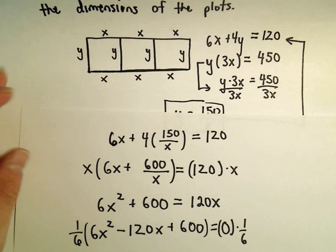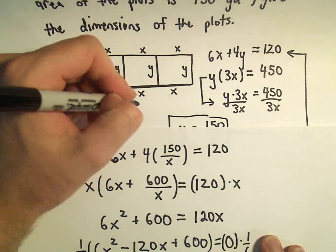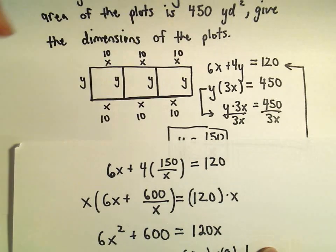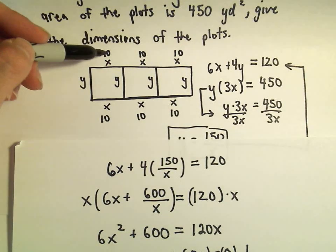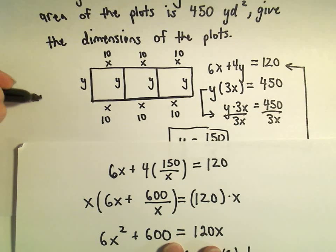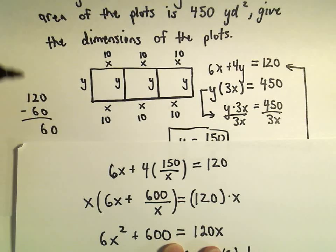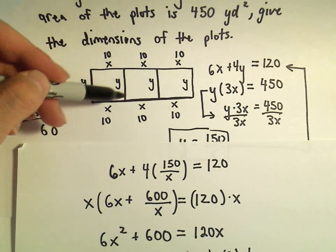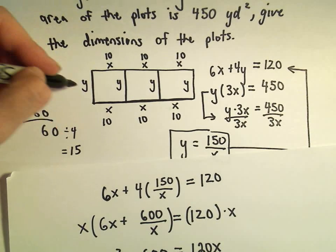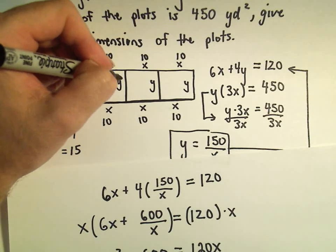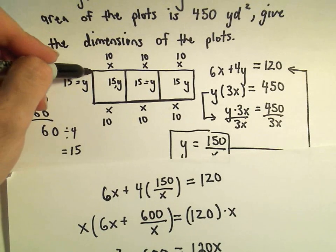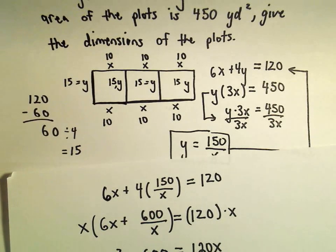So now we know that each one of these little widths is 10 yards. That accounts for 10, 20, 30, 40, 50, 60 of the 120 yards she had total to use. So that means she has 60 yards left over for the heights. Since there are four of those, each one would have to have a height of 15 yards. So each plot would be 15 yards by 10 yards.